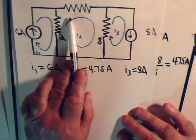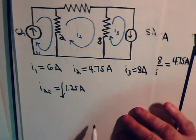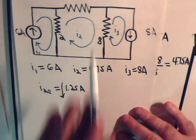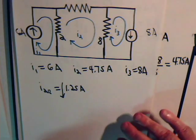Now for this resistor the only current going through it is I2 so that's 4.75 amps in that direction.